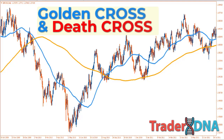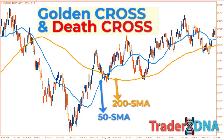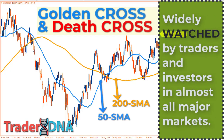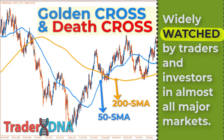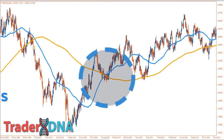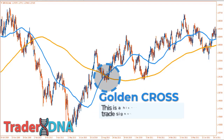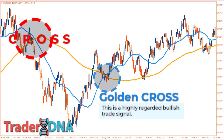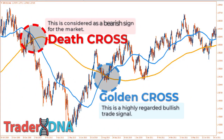Combining these two moving averages can also provide valuable clues about current market conditions. The 50 and 200-day moving averages are widely watched by traders and investors in almost all major markets. When the 50-day moving average rises above the 200-day moving average, a golden cross is said to have occurred — a highly regarded bullish trade signal. Conversely, when the 50-day moving average falls below the 200-day moving average, a death cross is said to have occurred, which is considered a bearish sign for the market.